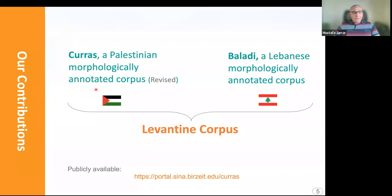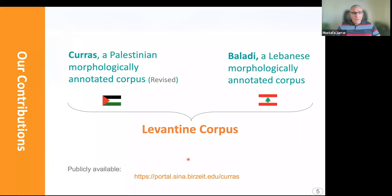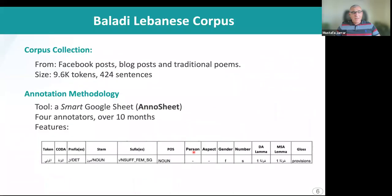In this paper, we did two contributions. We revisited the annotations of a published corpus called Corras for Palestinian Arabic, and we extended it with Baladi, a Lebanese morphologically annotated corpus. Together, both will provide a more complete Levantine corpus. Both are available over this site. Now I will give the mic to my colleague Kareem to present the Lebanese corpus.